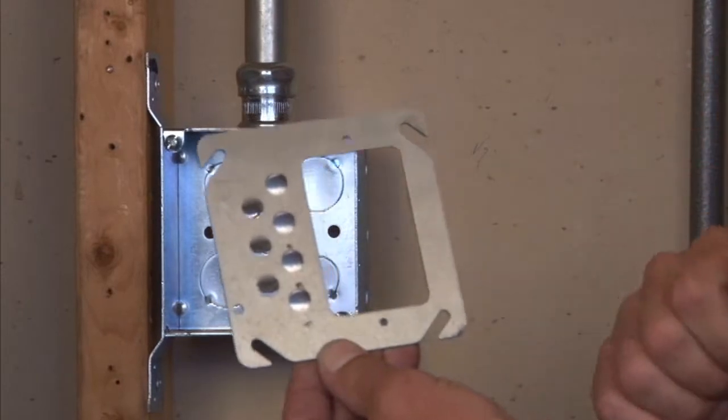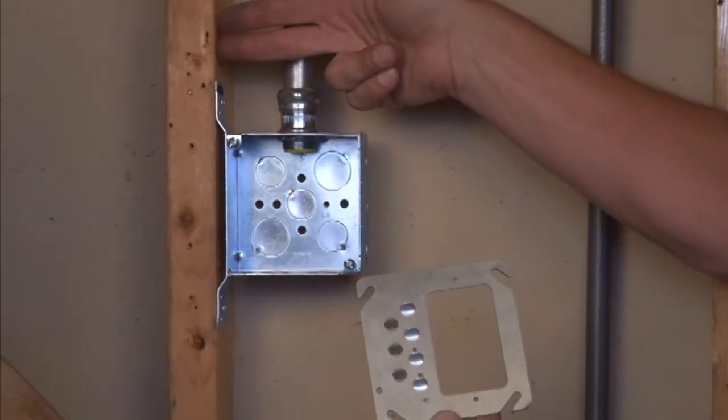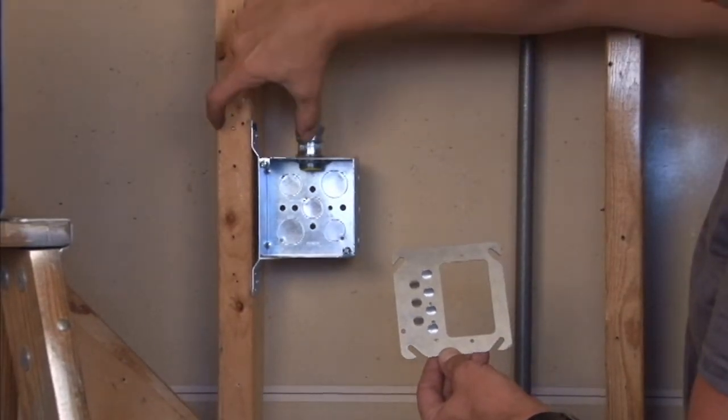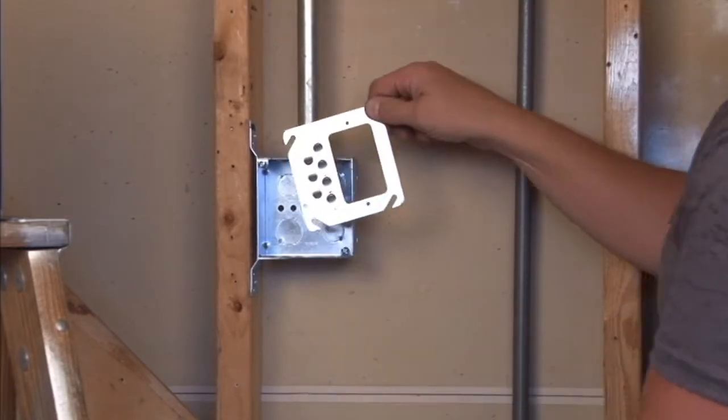The reason for an offset plaster ring is that many times your electrical box is fastened right to a stud, and decorative molding is placed around the trim on the outside of the wall.